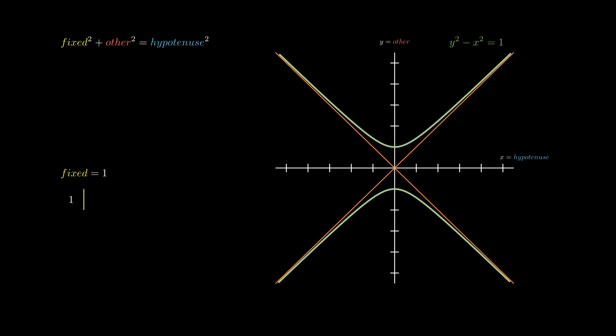If we reversed those assignments, it would look like this. This is now the graph of x-squared minus y-squared equals 1. This graph, with the hypotenuse on the x-axis and a fixed length of 1, is called the unit hyperbola and will be important later.